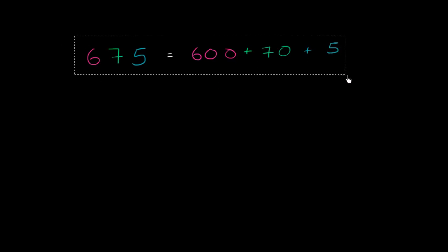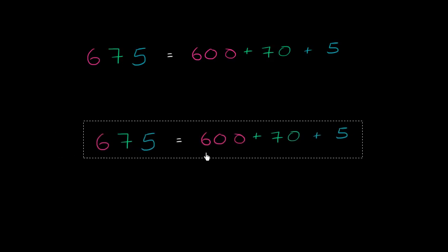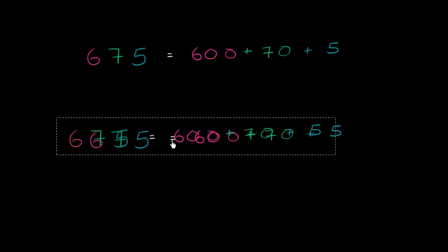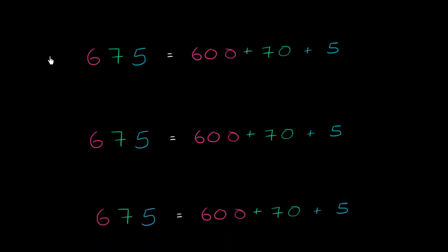Now let's think about how we can regroup the value in the different places to represent 675 in different ways. One thing we could do is regroup from one place to the next. For example, we could take 1 from the hundreds place, which makes it a 5 — essentially taking 100 away, making it 500.